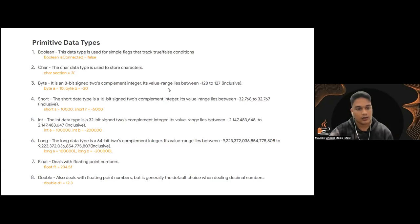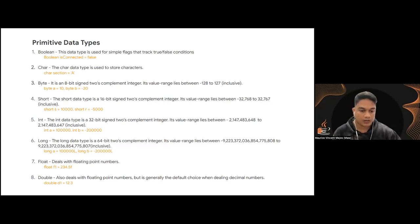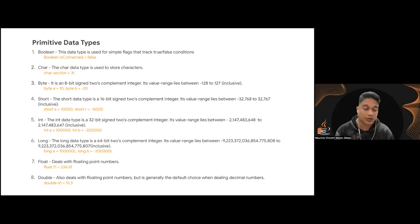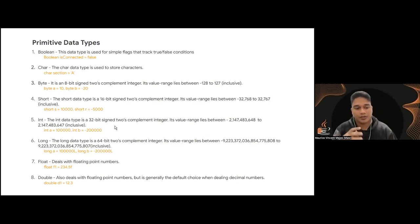We have the integral data types: byte, short, int, and long. In most cases for basic Java programming, we will most likely use int. Byte, short, and long are rarely used because the value range of int is enough for basic programming. Byte has 8 bits of memory. The differences between them are their value ranges: byte is -128 to 127, short is about -32,000 and up, int is about -2 billion and up, and long goes up to -9 quintillion and beyond.